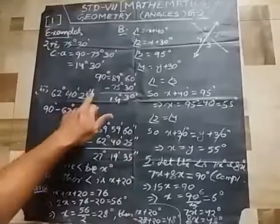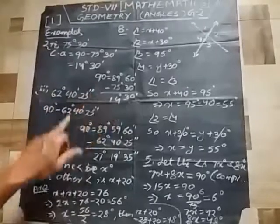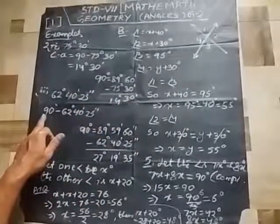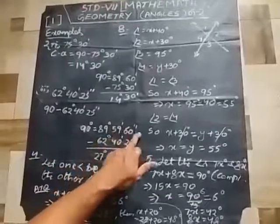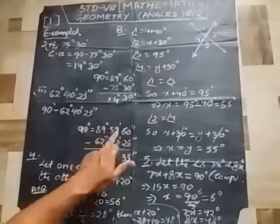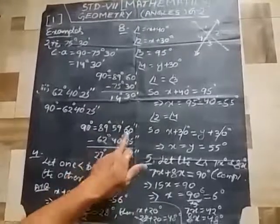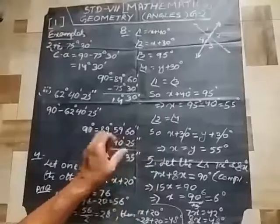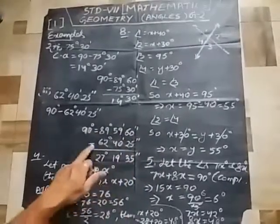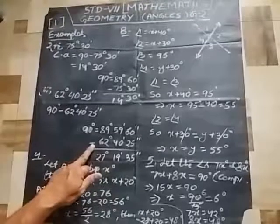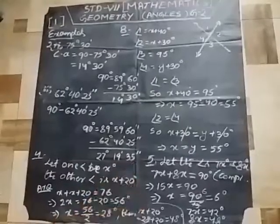If the angle is given as 62 degrees, 40 minutes, and 25 seconds, its complementary angle is found by subtracting from 90 degrees. Convert 90 degrees to 89 degrees, 59 minutes, and 60 seconds — because 60 seconds equals 1 minute, so 1 minute and 59 minutes gives 60 minutes total. After subtracting, the result is 27 degrees, 19 minutes, and 35 seconds.